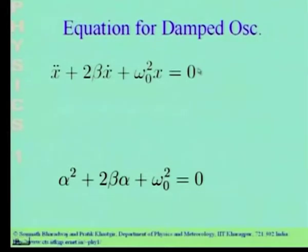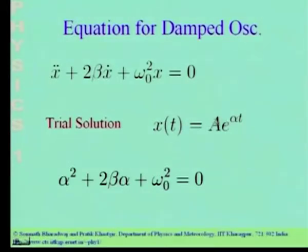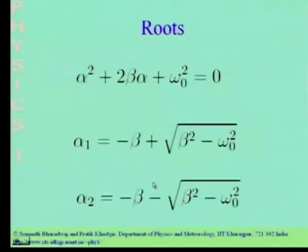We want to solve this equation. The way we proceeded was to take a trial solution x(t) = A·e^(alpha·t), plug it into the differential equation, and the term e^(alpha·t) and constant A cancel out, leaving a quadratic equation governing alpha. The roots alpha_1 and alpha_2 of this quadratic equation are given here — this was discussed in the last class.